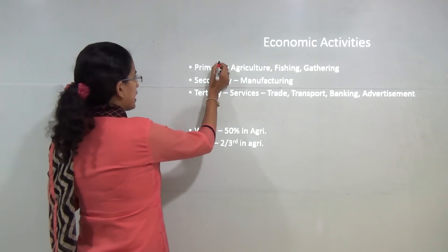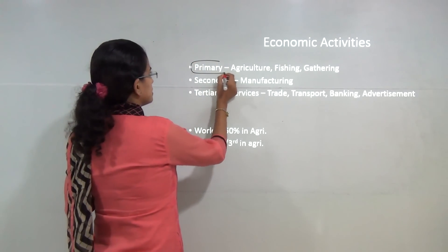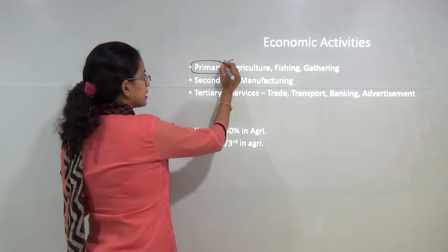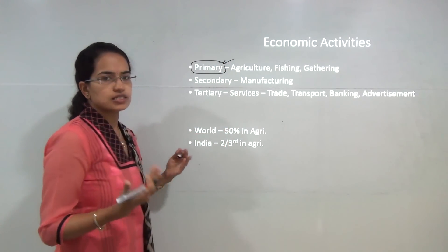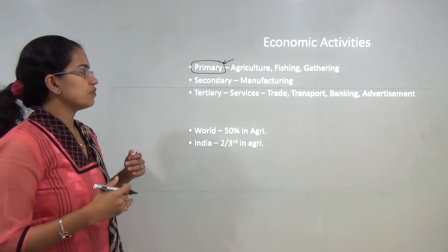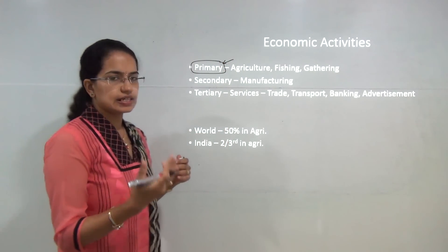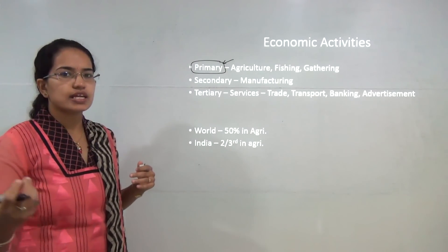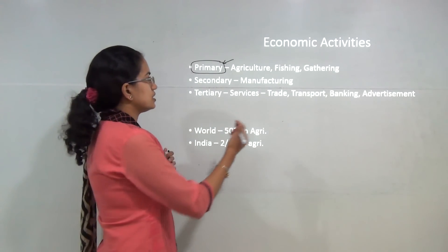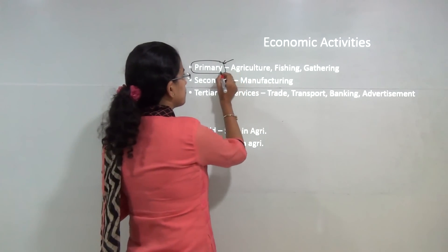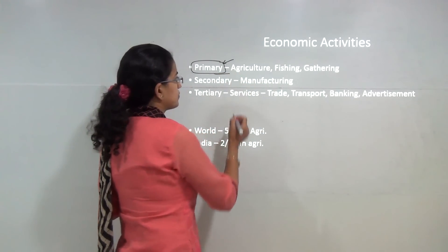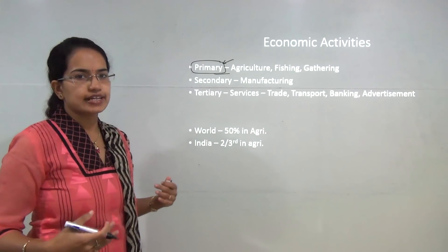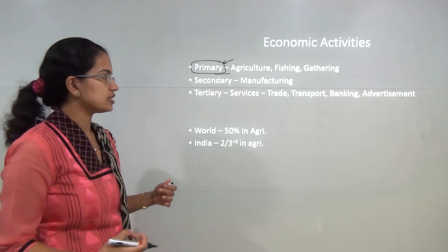When we say primary activity, that means we are using products directly from nature. For example, agriculture, fishing, hunting, and gathering. All these are kinds of primary activities which involve direct interaction with nature.